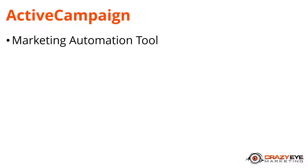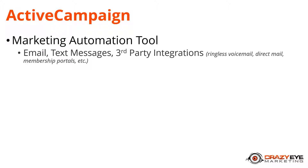In this video we're going to talk about what ActiveCampaign is and then we're going to register for an account. ActiveCampaign is a marketing automation tool — it helps you automate your email, text messaging, and third-party integrations. Those integrations are typically handled via a webhook, which means ActiveCampaign passes information to another piece of software. You'll typically integrate with a tool called Zapier, and third-party integrations include things like ringless voicemail, direct mail, membership portals, etc. Very flexible and adaptable with a lot of options.